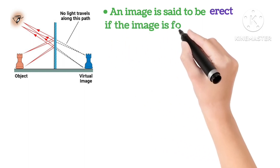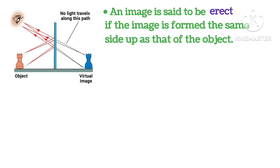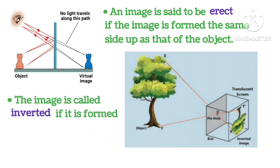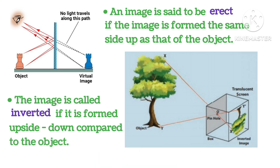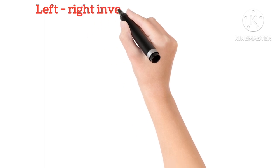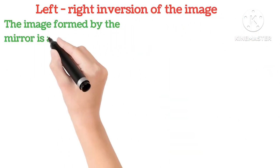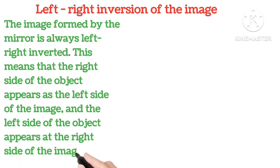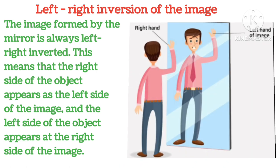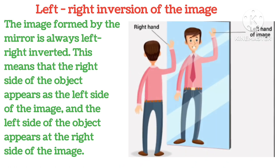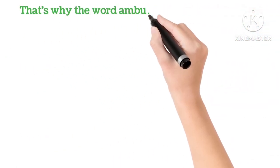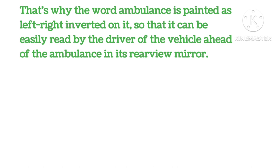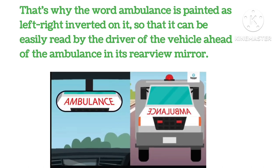An image is said to be erect if the image formed is the same side up as that of the object, as you can see in the picture. The image is called inverted if it is formed upside down compared to the object. Left-right inversion of the image: the image formed by the mirror is always left-right inverted. This means that the right side of the object appears to be the left side of the image and vice versa. That is why the word ambulance is painted as left-right inverted so that it can be easily read by the driver of the vehicle ahead in its rear view mirror.